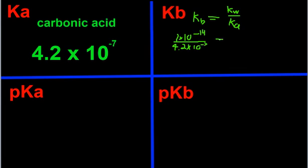So it's a pretty simple calculation to get Kb, which comes out to 2.38 times 10 to the negative 8.